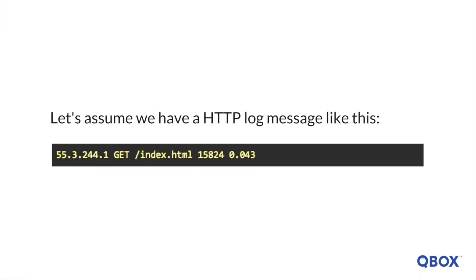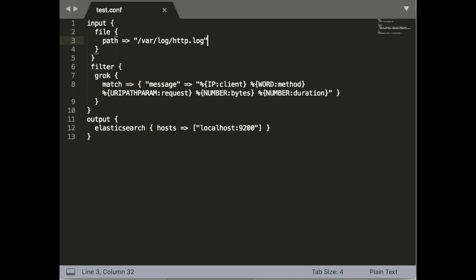Let's take a look at a more realistic example to illustrate how Grok filter works. Let's assume that we have an HTTP log message like this. Many such log messages can be stored in your log file, so we can use the Logstash file input that tails the log files and emits events when a new log message is added. First, let's save the log message in a file. Next, let's define the Logstash configuration. In the filter part of the configuration, we define syntax-semantic pairs that match each pattern in the Grok filter to specific elements of the log message sequentially.